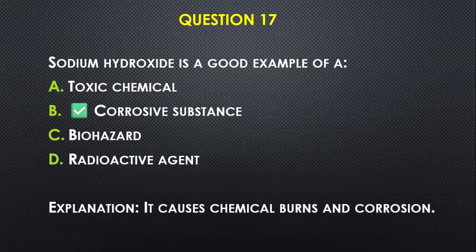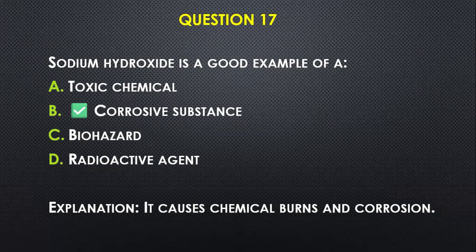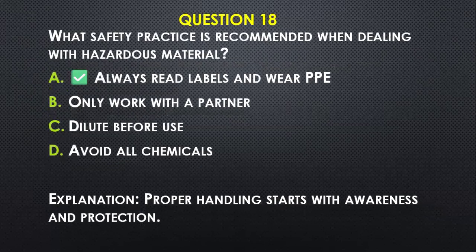Question number seventeen: Sodium hydroxide is a good example of — A) a toxic chemical, B) a corrosive substance, C) a biohazard, D) a radioactive agent. I will go with B — corrosive substance — because sodium hydroxide, whether in solid form or as a solution, causes chemical burns and corrosion.